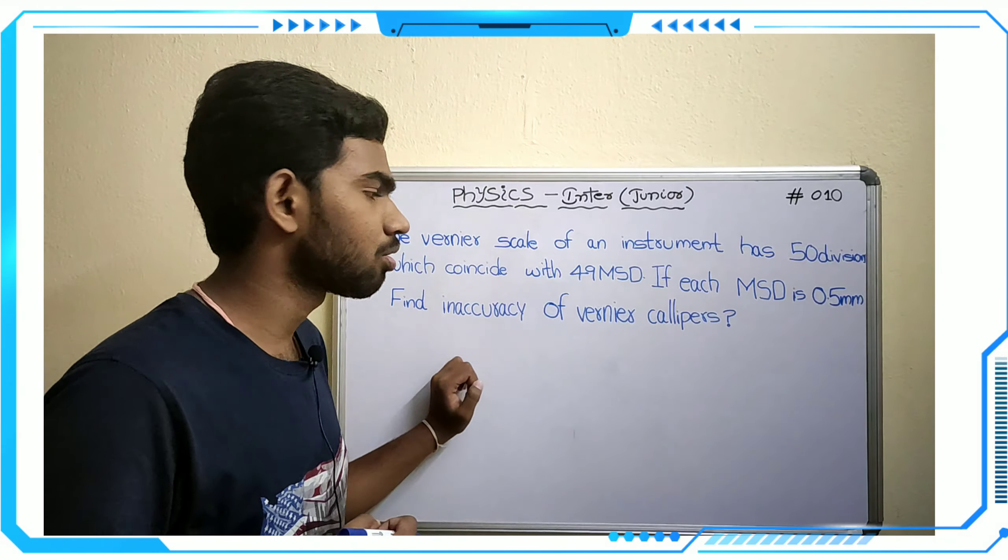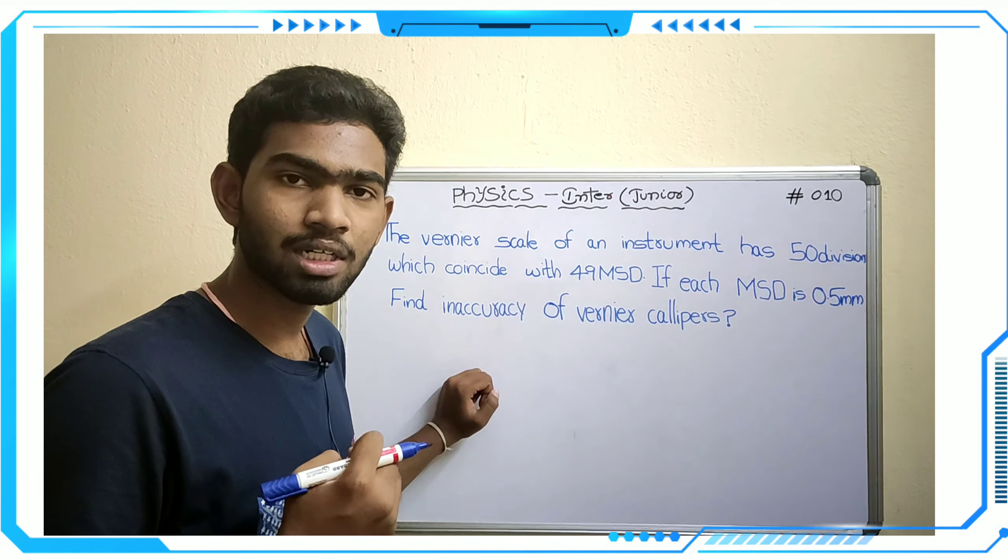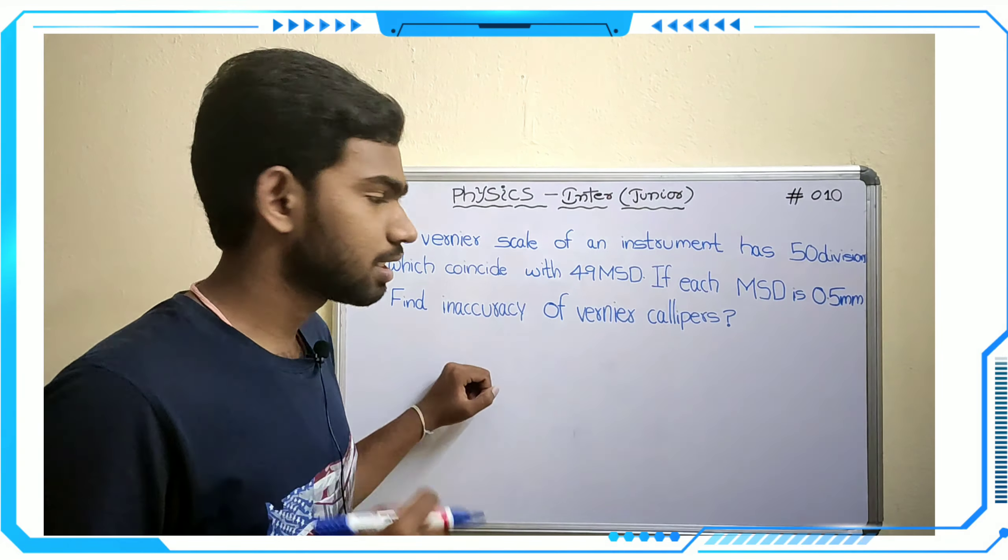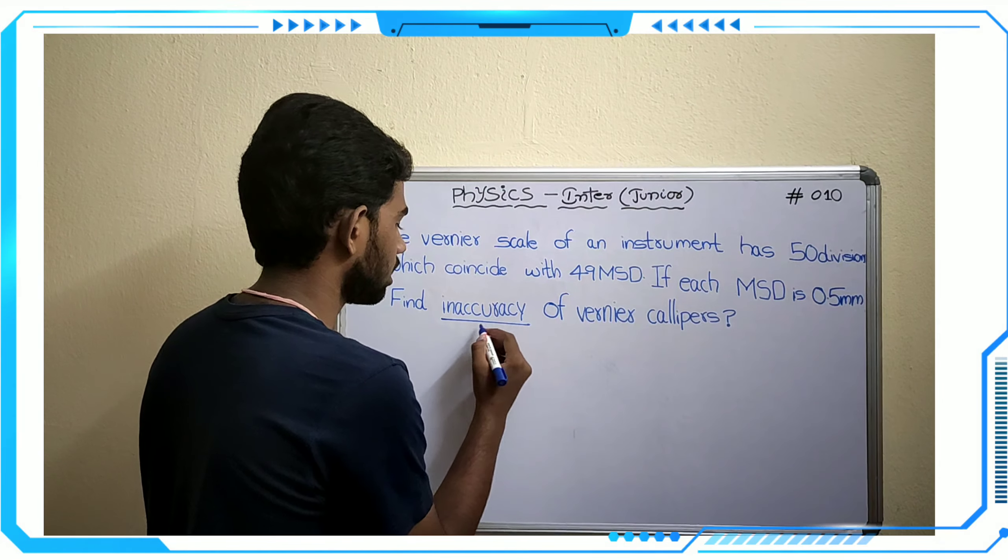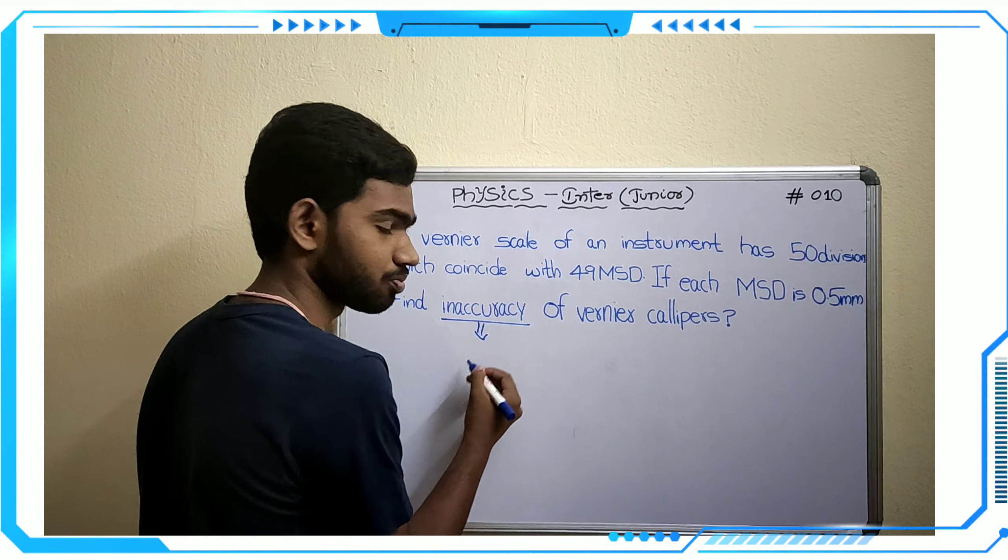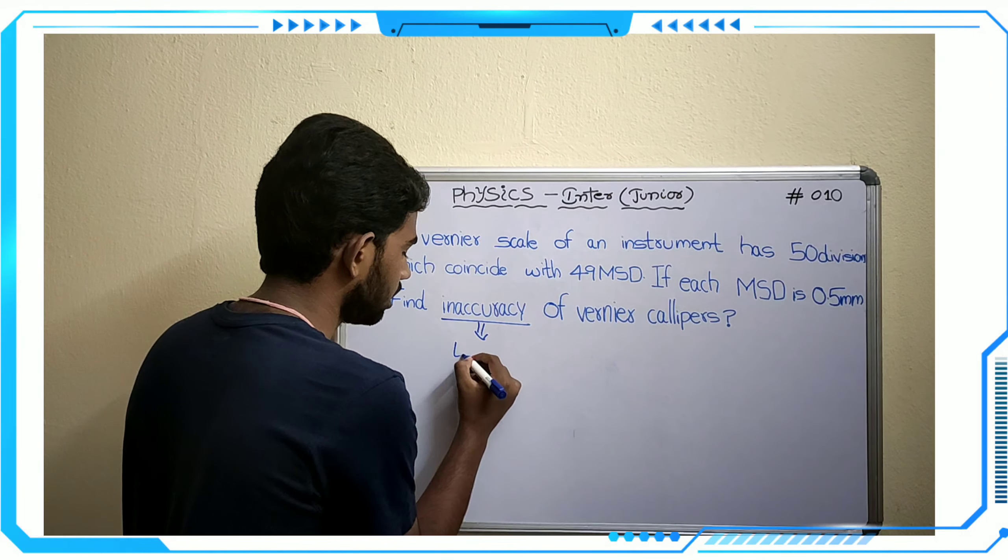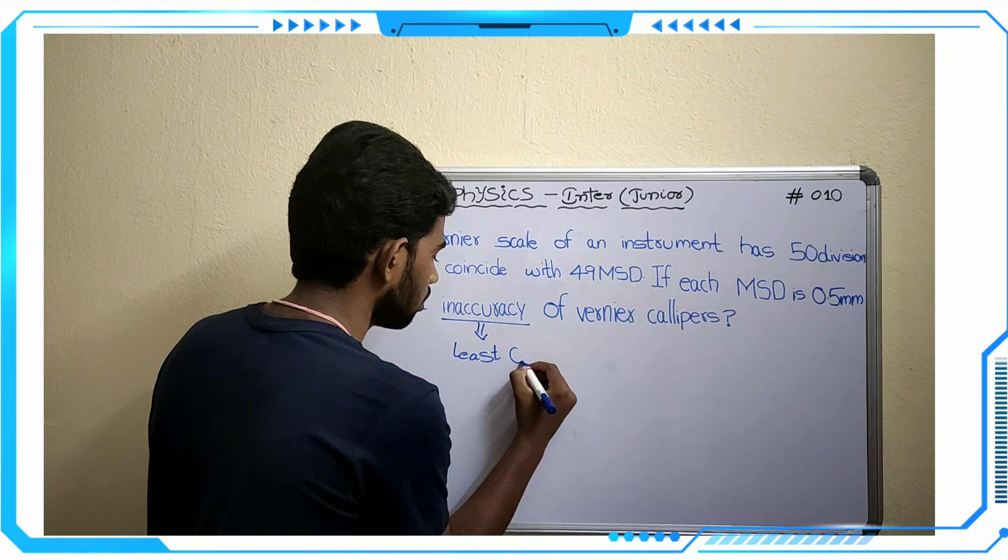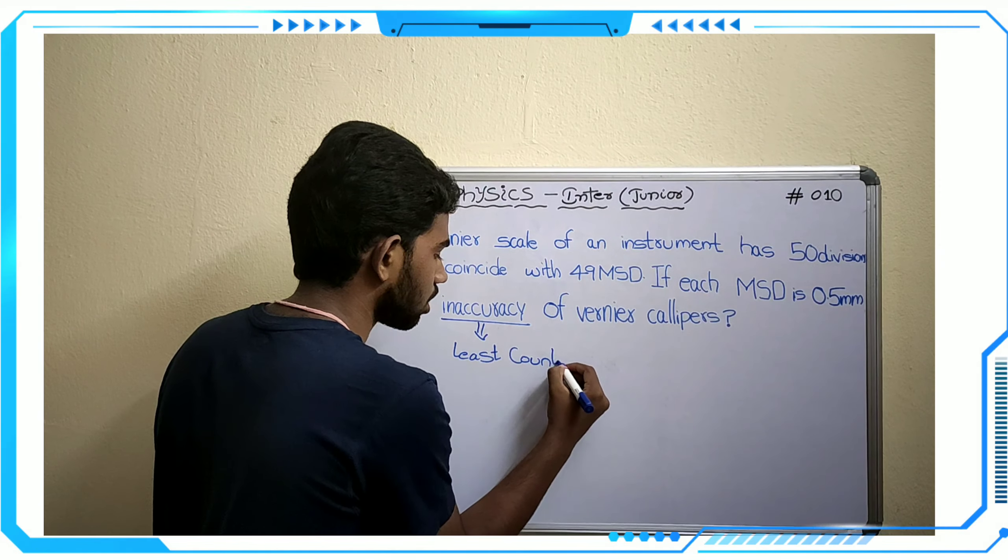Minimum inaccuracy doesn't have its own formula, but minimum inaccuracy is directly equal to the least count formula.